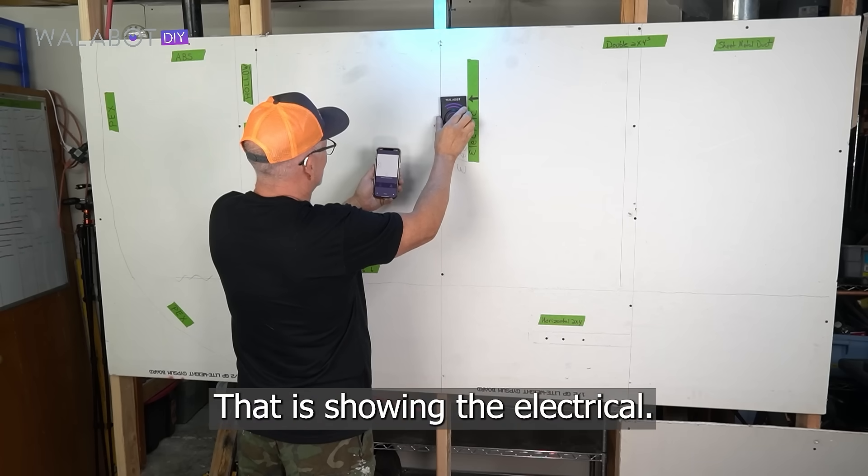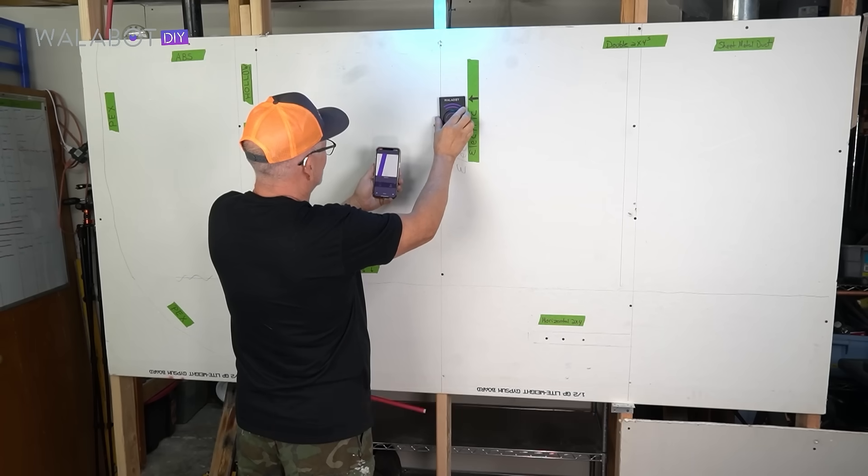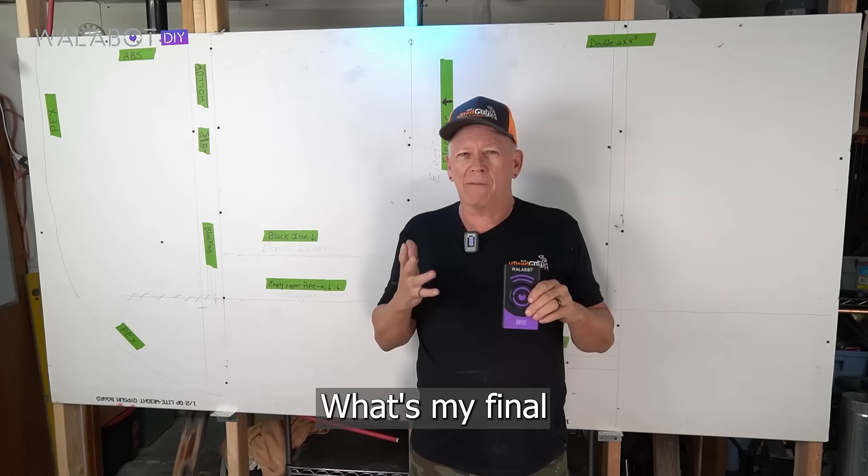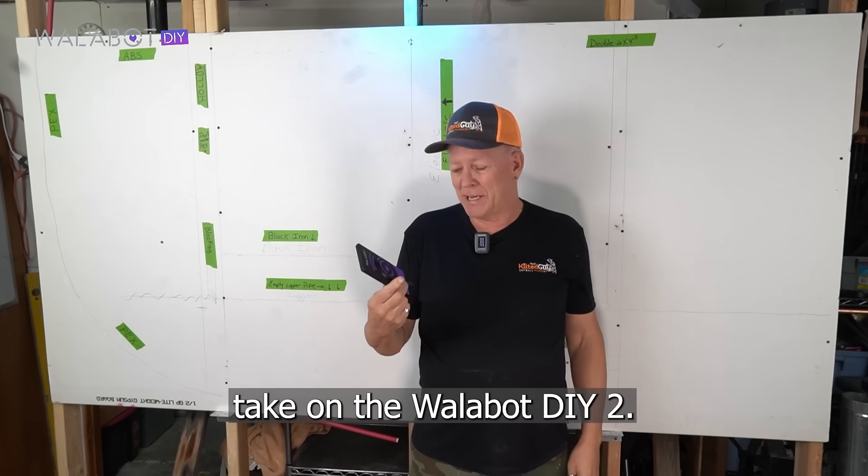That is showing the electrical. It says pipe and wire. Okay, what's my final take on the Walabot DIY 2?